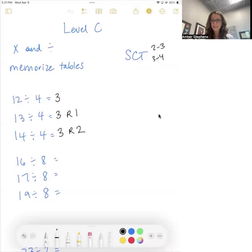So next section, 16 divided by 8. This one's from our times tables too, because two times eight is 16. 17 is one more, so just to remainder one. 19 divided by 8 is going to be 2 remainder 3, because it's three digits between 19 and 16.